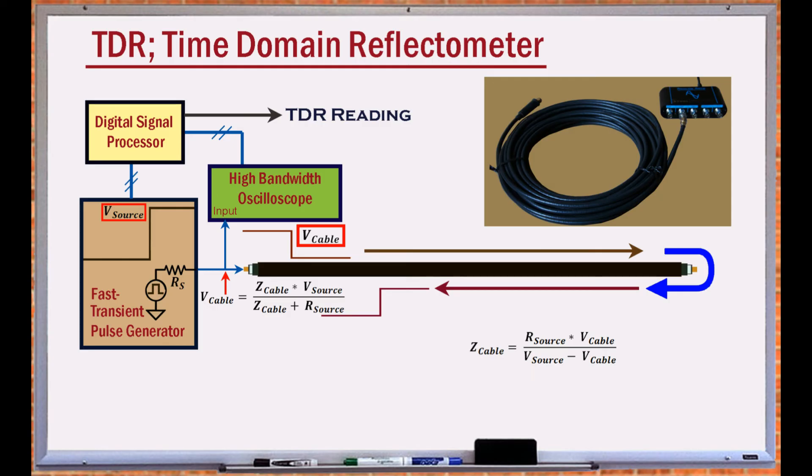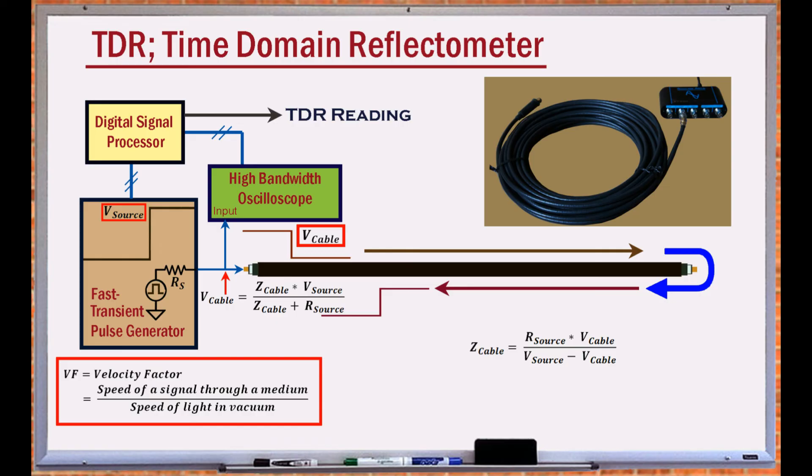The divided signal travels through the cable at a fraction of the speed of light in vacuum. This fraction is referred to as the velocity factor of the cable. For a coax it is about 0.67.